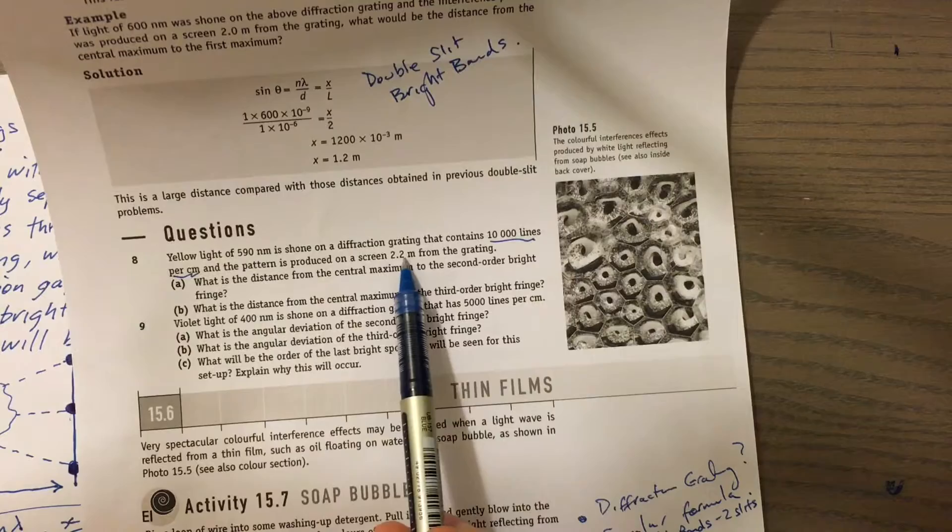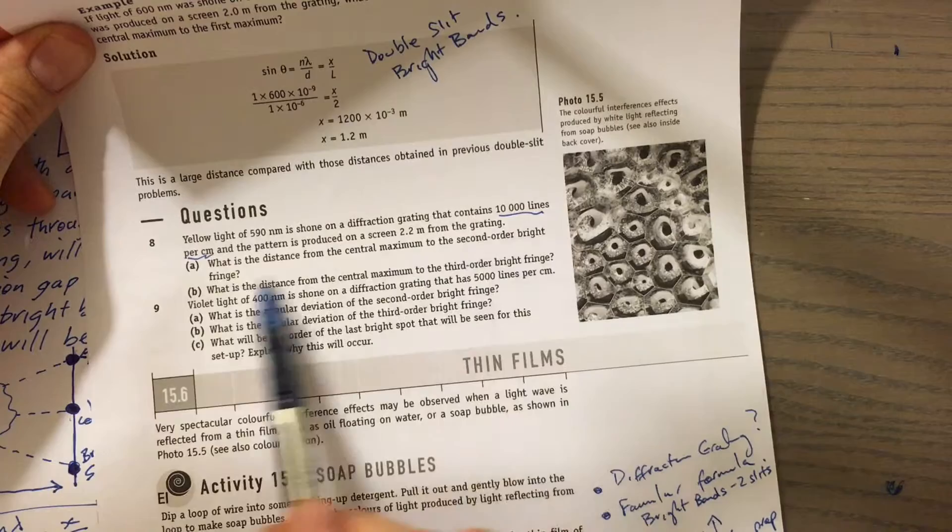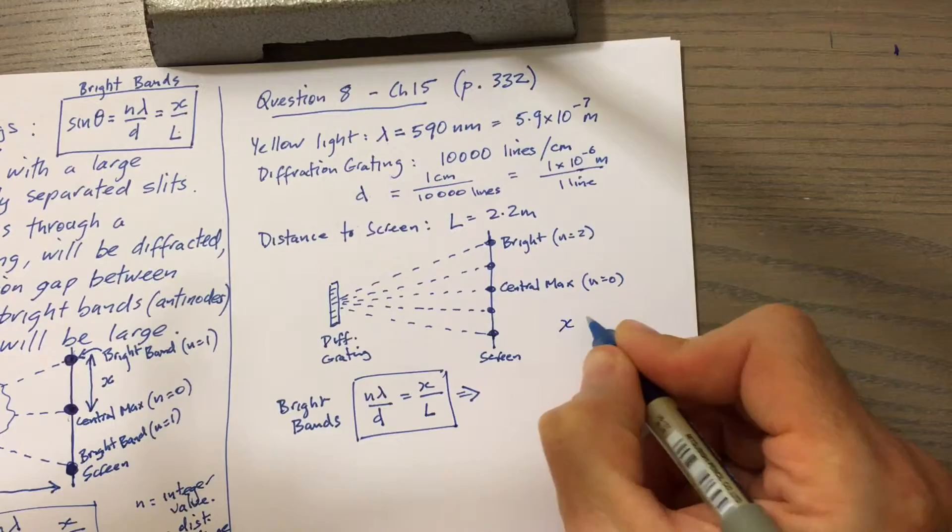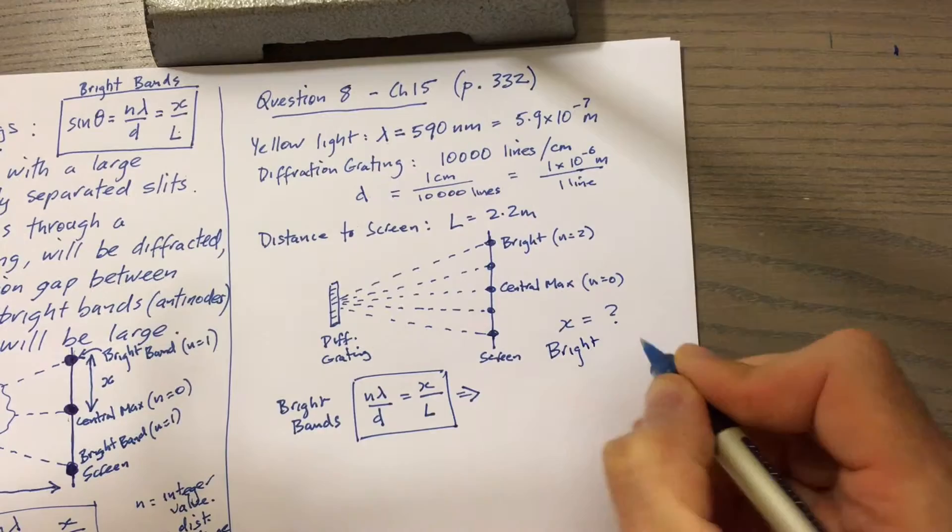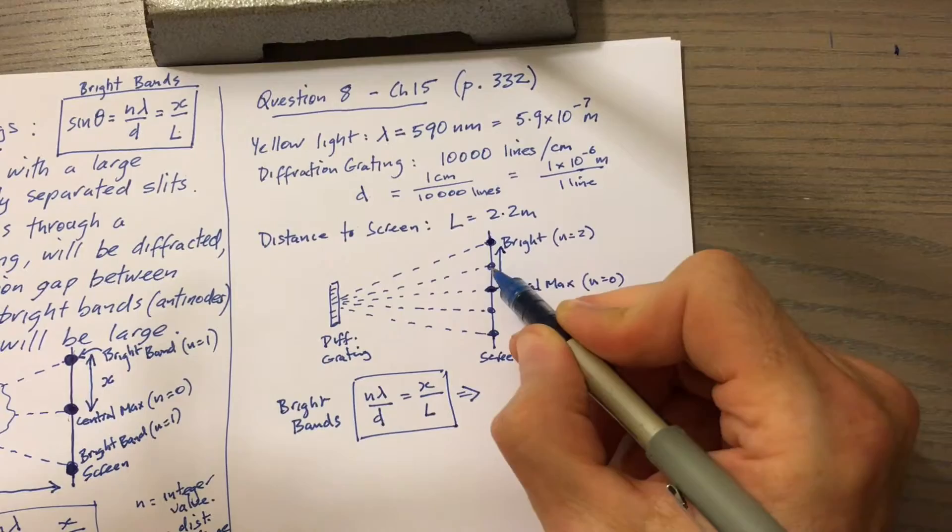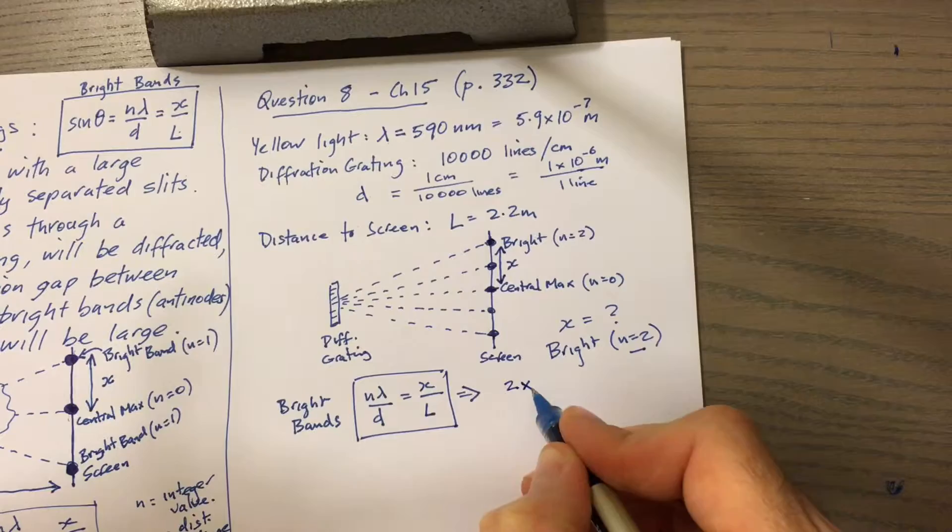So we've got d, we've got lambda. Let's look at the question again. We have a pattern on a screen which is 2.2 meters from the grading, so L then is 2.2 meters. First question: what is the distance from the central max to the second order bright fringe? That's familiar language we've seen in other questions. In other words we need to find x, if we're measuring to a bright band where n is equal to 2. If that's your central max and this is the second bright band, we need that distance x.